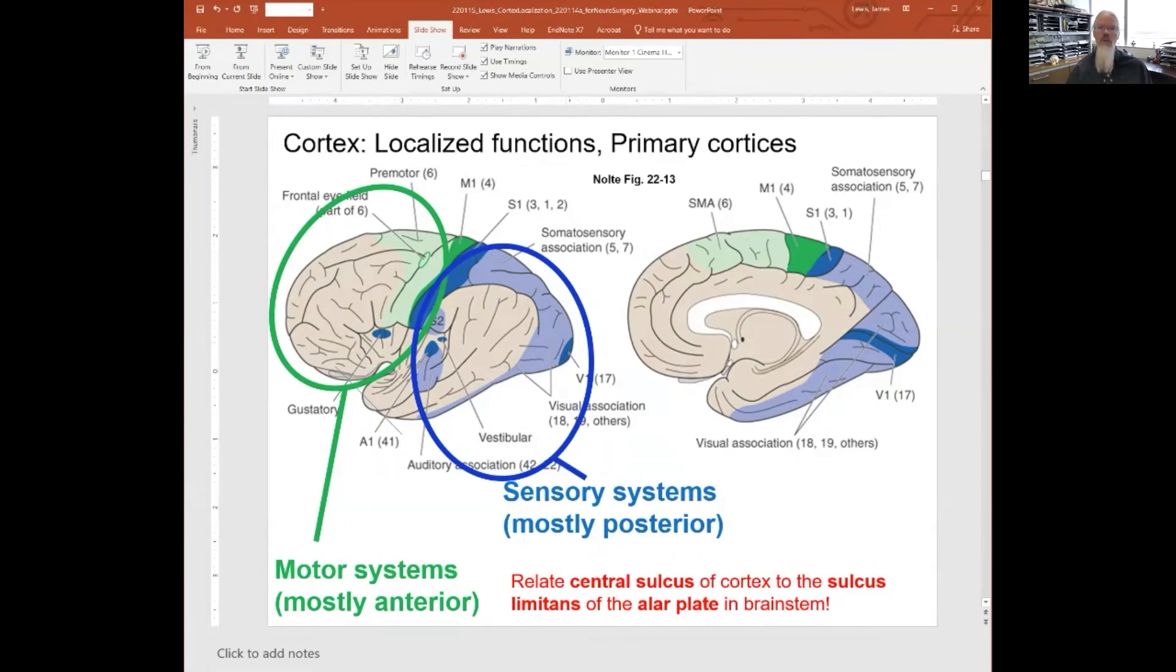For instance, we have at the posterior lobe the primary visual cortex, laterally just deep in that Sylvian sulcus the auditory cortex, and along that post-central lobule the primary sensory cortex for sense of touch.